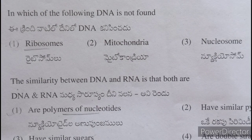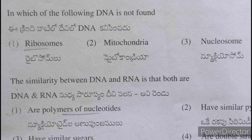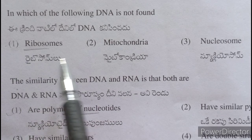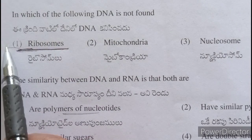In which of the following is DNA not found? — E krindi vadi lo dhenilow DNA kani pii nch — DNA is not found in ribosomes. Ribosome lo nandu DNA kani pii nch.